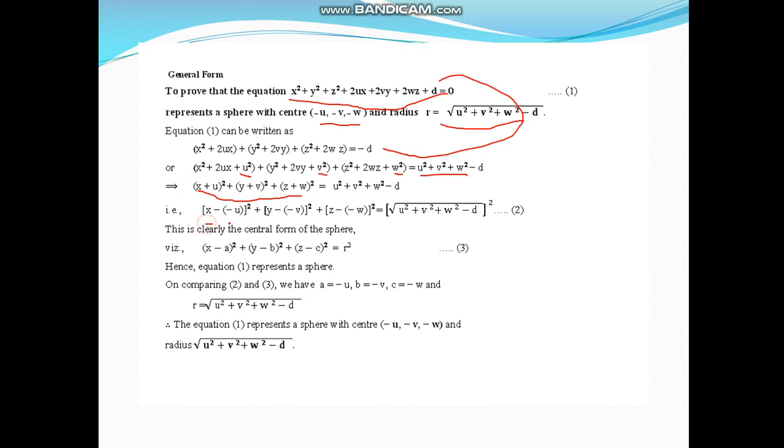So it can be written in this form. Clearly compare these two, so we will get here: hence equation (1) represents a sphere. Compare these two and three: radius is given by this formula, and center is this. The general form has center (-u, -v, -w) and radius √(u² + v² + w² - d).